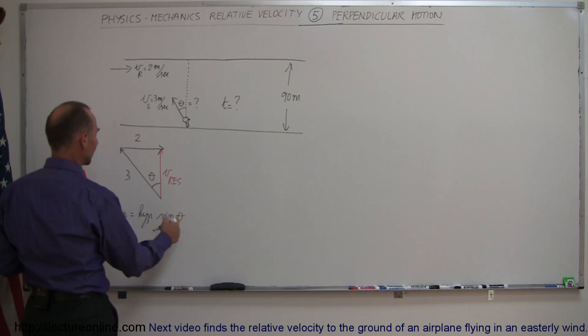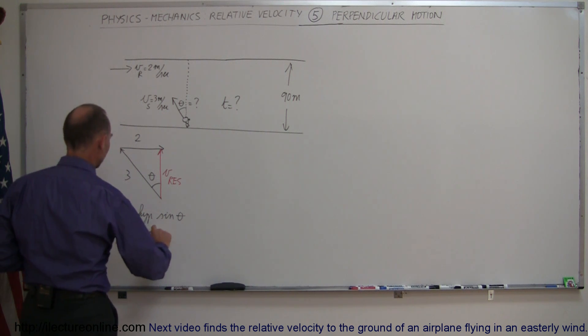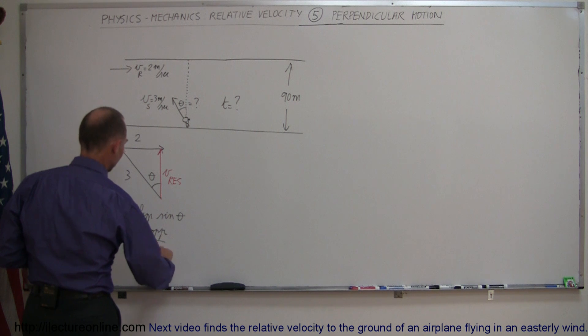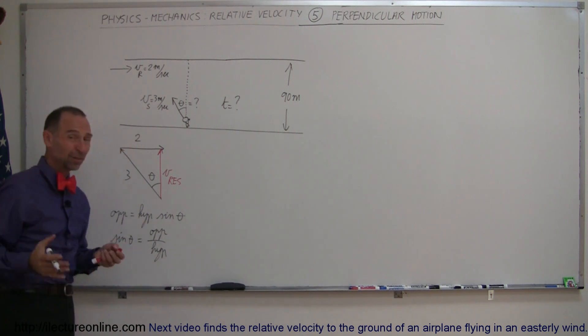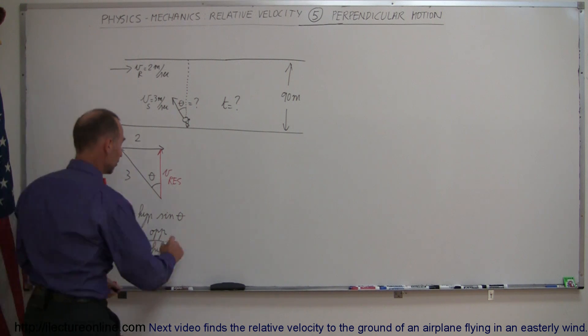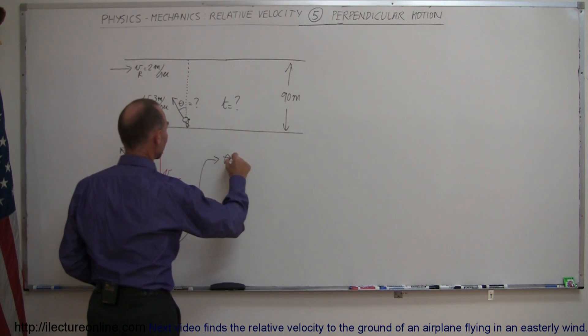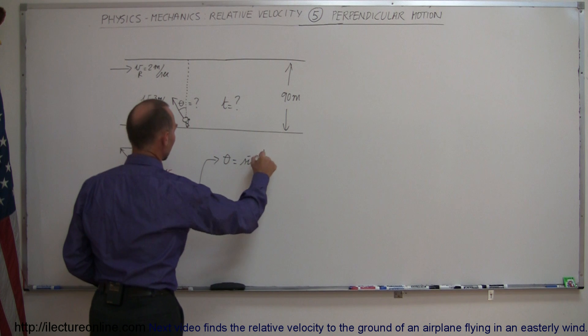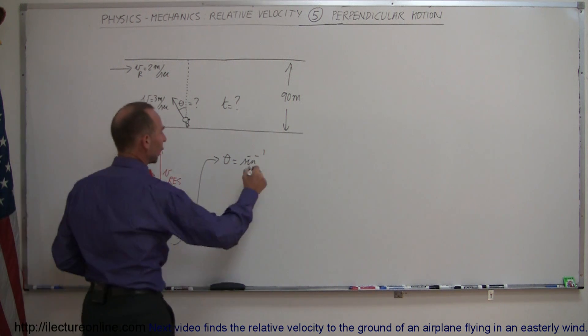Since we're looking for theta, we can then solve this. We can say that sine of theta is equal to the opposite side divided by the hypotenuse. I guess I could have started with that definition because that's really the definition of the sine of the angle, which means that the angle theta is equal to the arc sine of the opposite side over the hypotenuse.